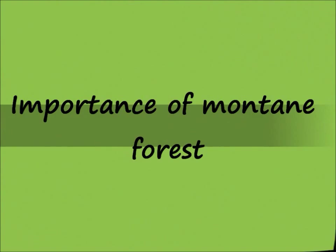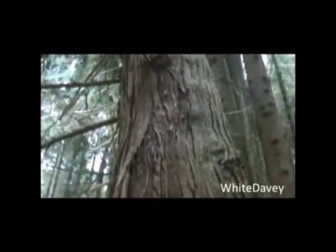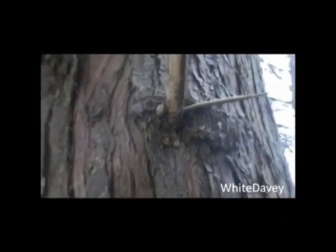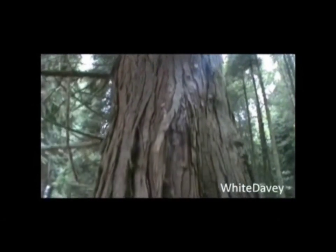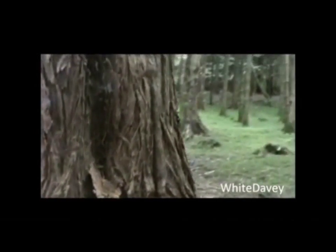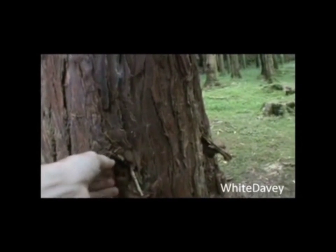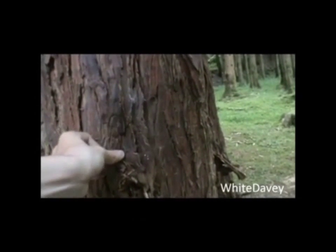Here we have a coniferous montane tree in a montane forest. You can see a path — this path is that of a snail. This alone helps in maintaining the biodiversity of the region and plays an essential role in the sustainability of the environment. The bark also helps in the biodiversity of the region; it has peeling bark that helps to regenerate the soil and protect against excessive weathering.